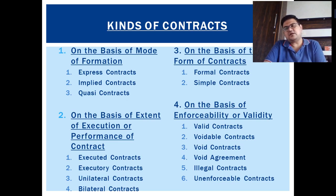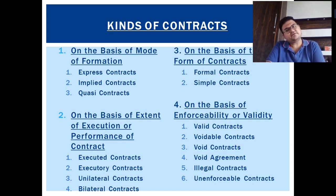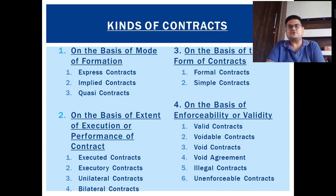On the basis of mode of formation, we have express, implied, and quasi contracts. An express contract is either oral or written. For example, you orally call a friend and say: I want to sell my mobile phone for rupees 40,000 — do you accept? The friend says yes. That is an oral express contract. Similarly, sending a WhatsApp message with the offer and receiving acceptance in writing is also a valid express contract.